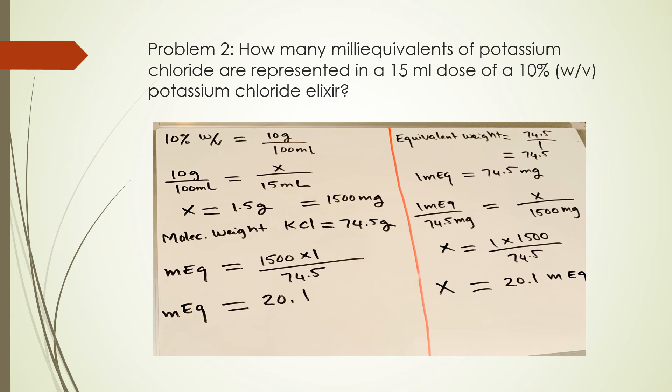Now to calculate the milliequivalent, we can use the formula that I talked about previously. That will be milliequivalent equals the valence. The valence of potassium chloride is 1. The weight is 1500. And then the molecular weight of potassium chloride is 74.5. So that means your final answer will be 1500 times 1 divided by 74.5. And that's 20.1 mEq.